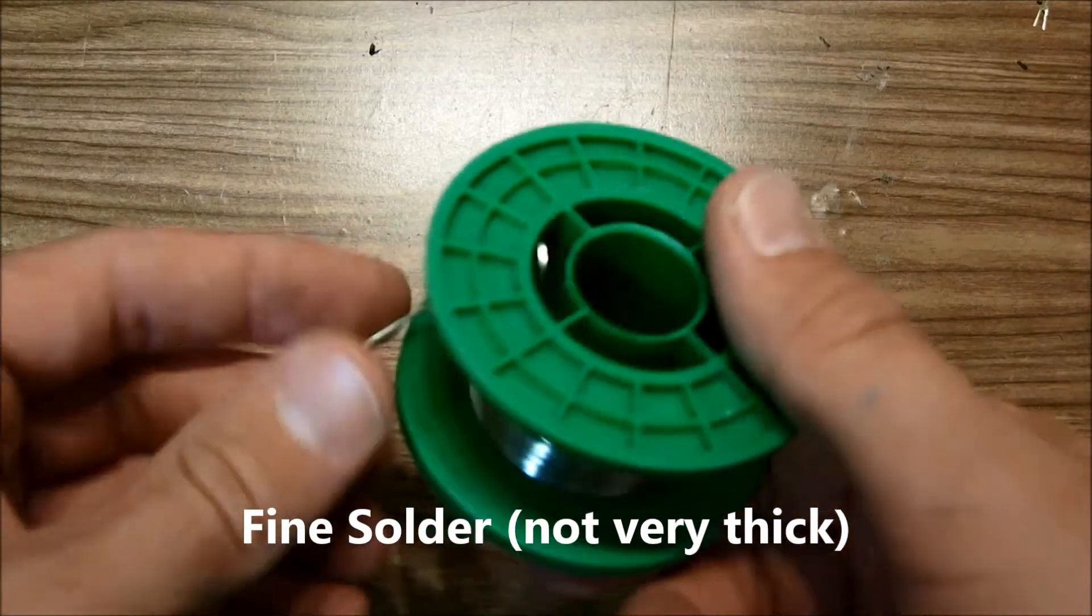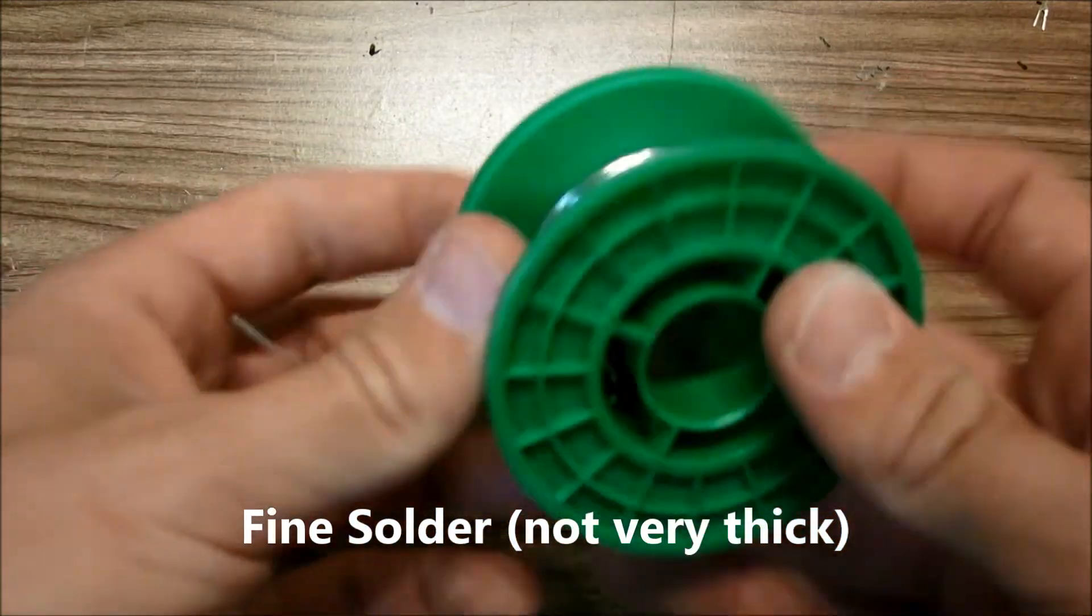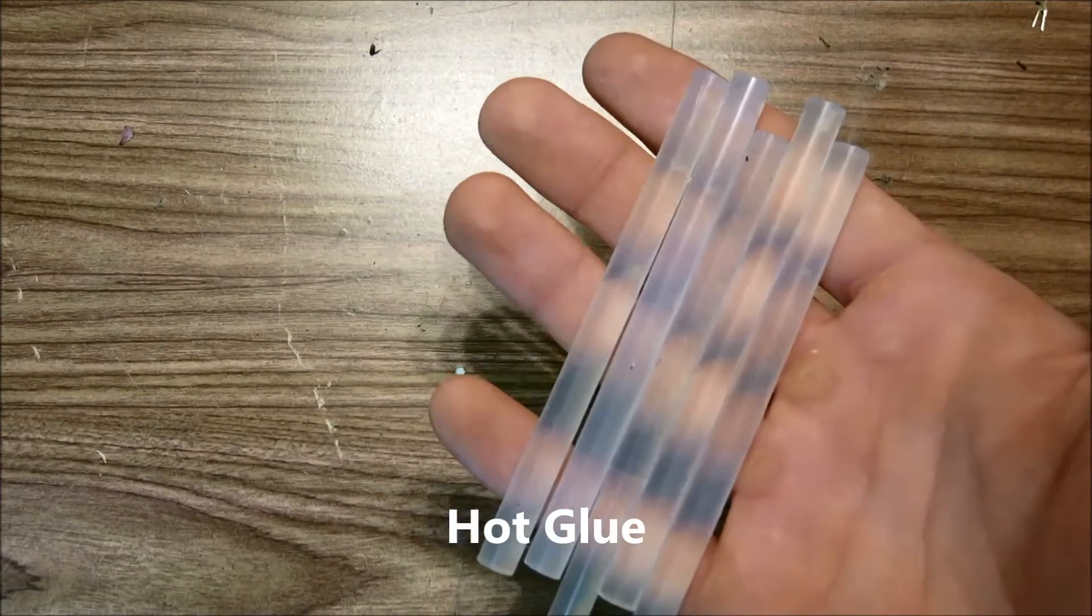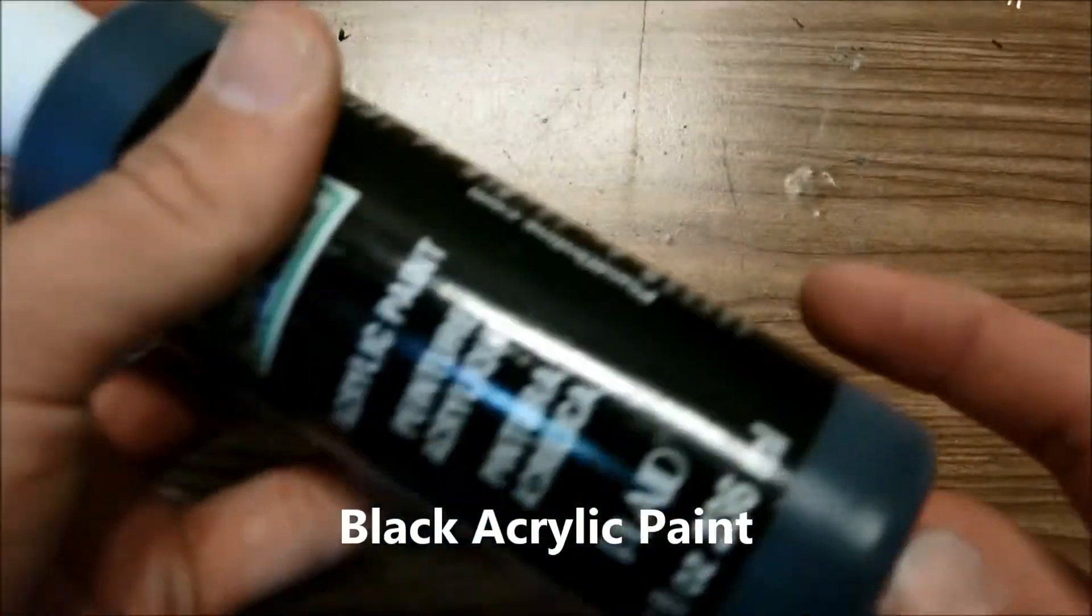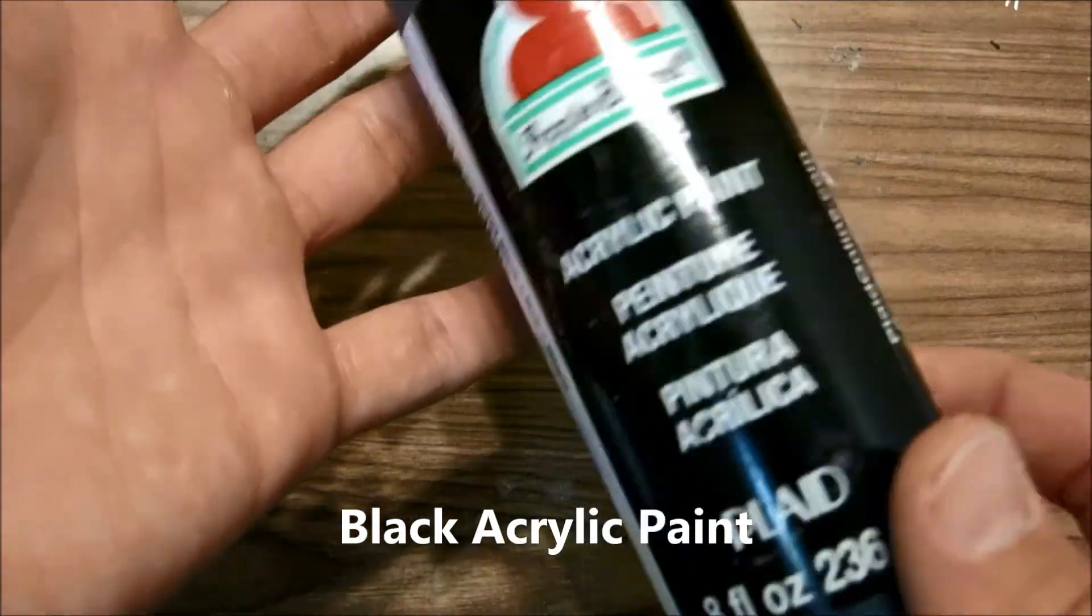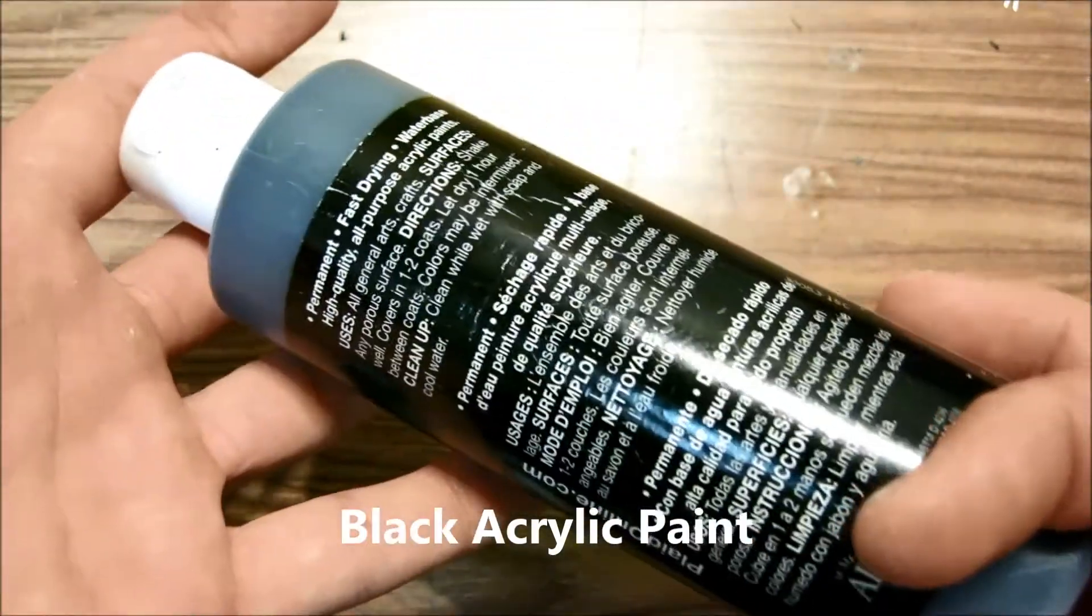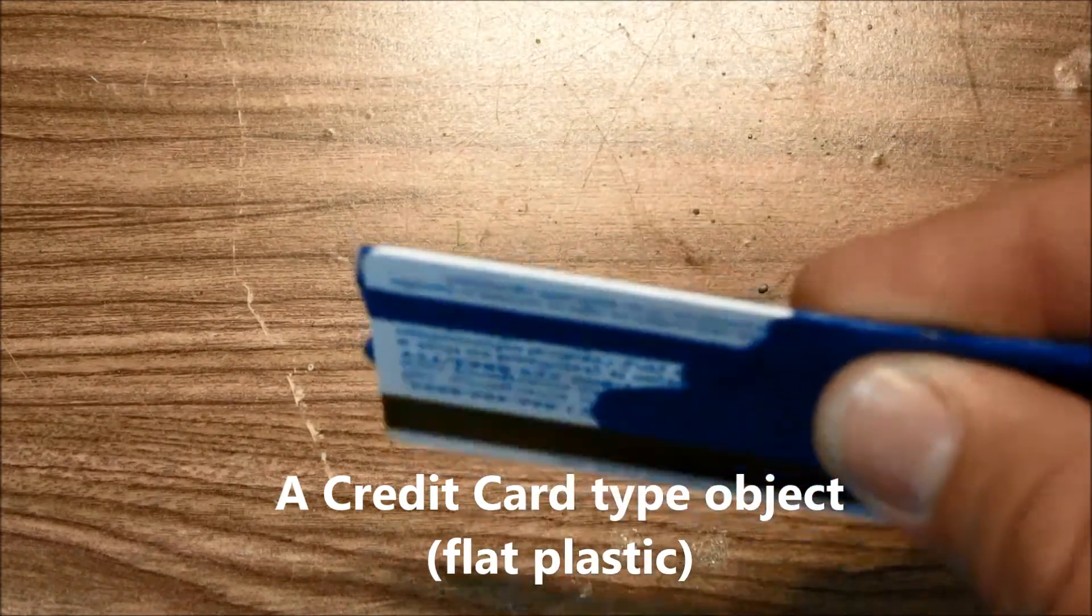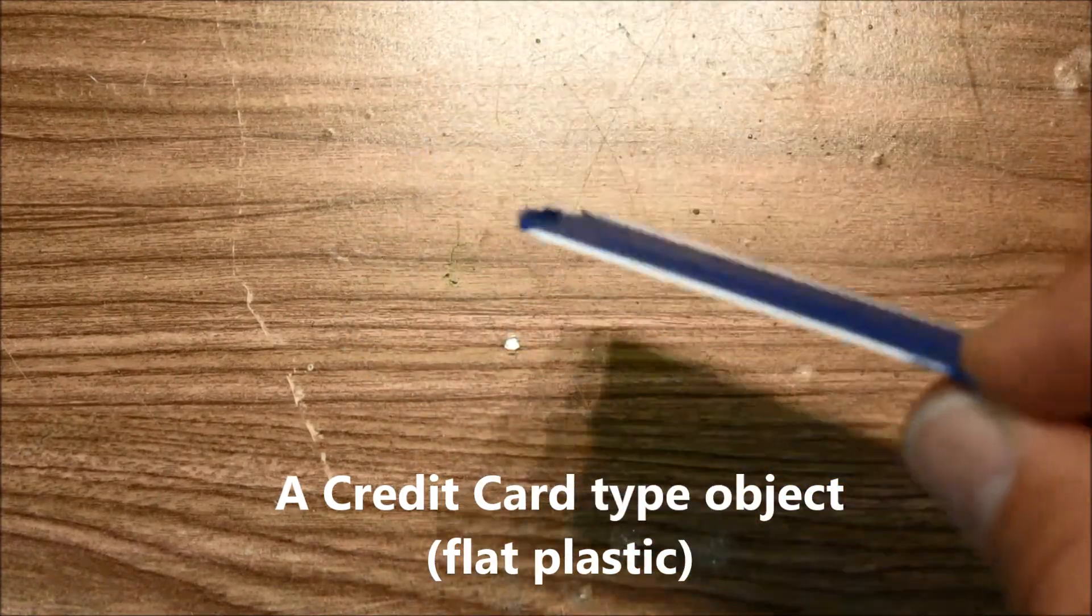You'll need solder. This is lead free. You'll need a couple sticks of hot glue. And you will also need some black acrylic paint so you can find this stuff at your local Walmart or similar store. You will need a credit card type object or an ID card or similar flat piece of plastic like this.